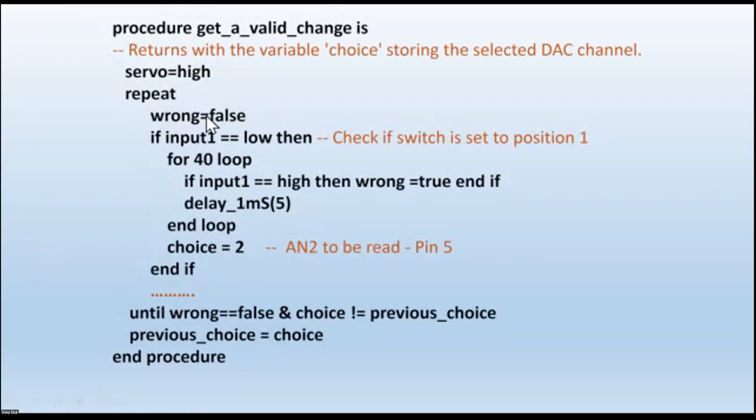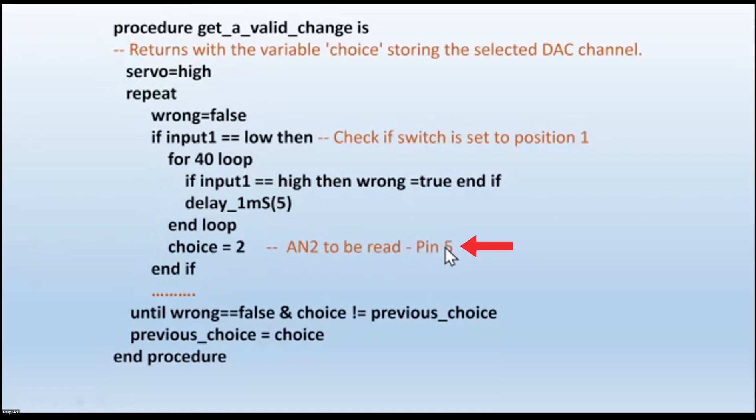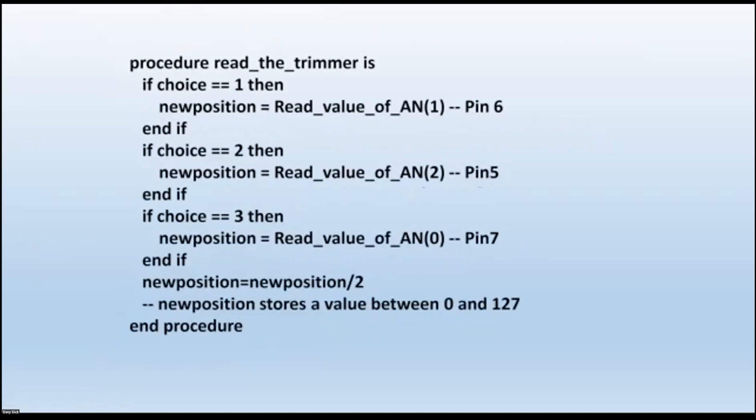So that's what happens. Our input 1 goes low, we check 40 times, is it still low the whole 40 times? And if it is, everything's okay, we can read that particular trimmer. So we're going to repeat that code three times, depending on what we have. And then we read the appropriate trimmer. If you've chosen that the input is 1, read AN1. If it's 2, read AN2. If it's 3, read AN3.